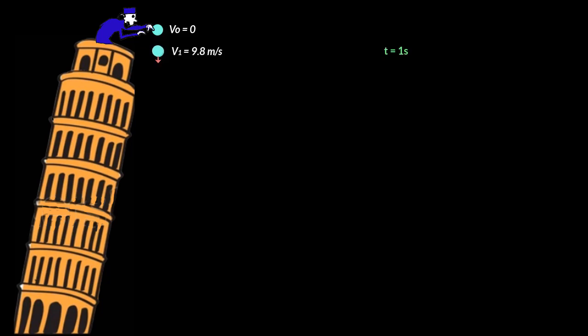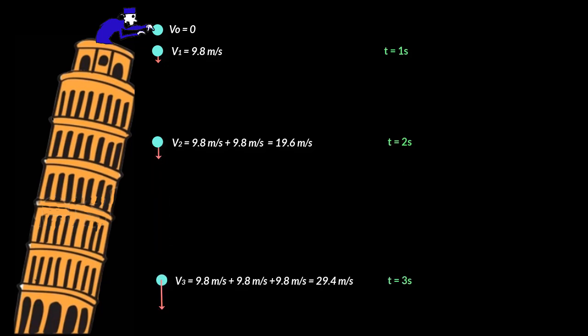At the end of one second, its velocity will be 9.8 meters per second. Wait for one more second — at the end of two seconds, its velocity will be 9.8 plus 9.8 meters per second, or 19.6 meters per second. At the end of three seconds, it will be 29.4 meters per second. So every second, the velocity of the object increases by 9.8 meters per second.